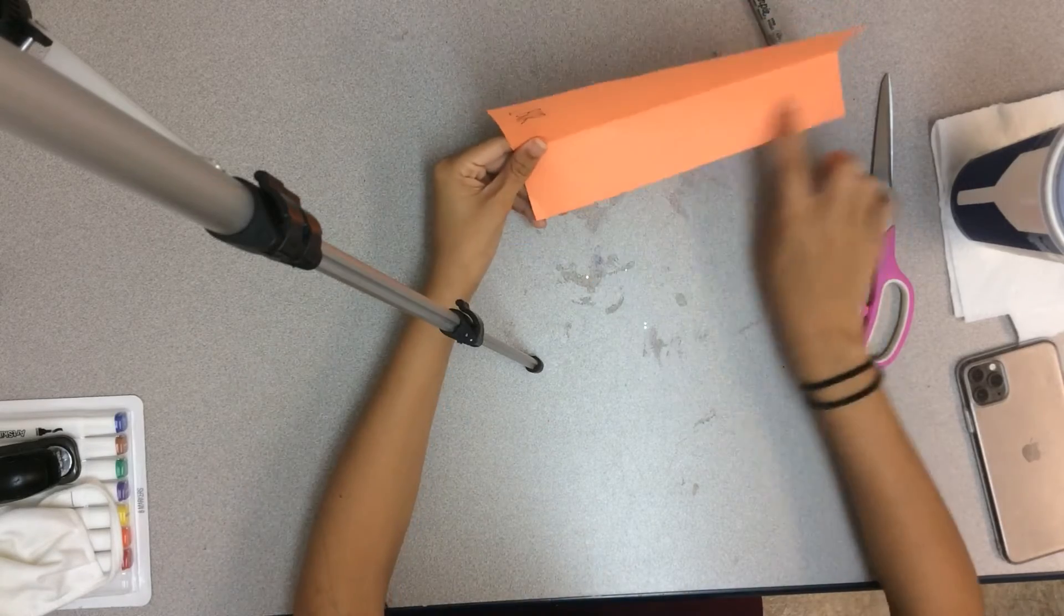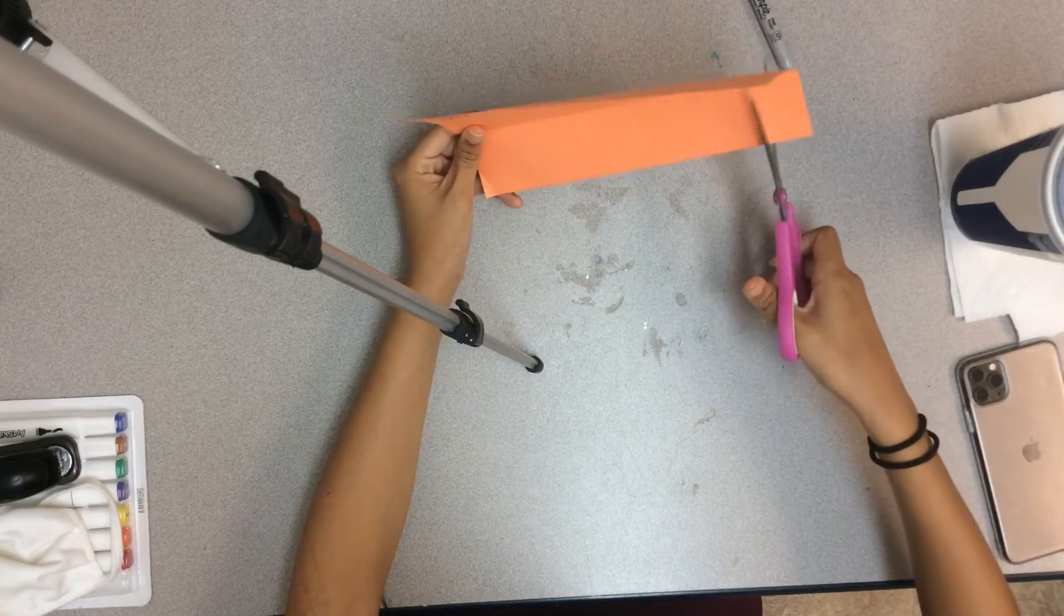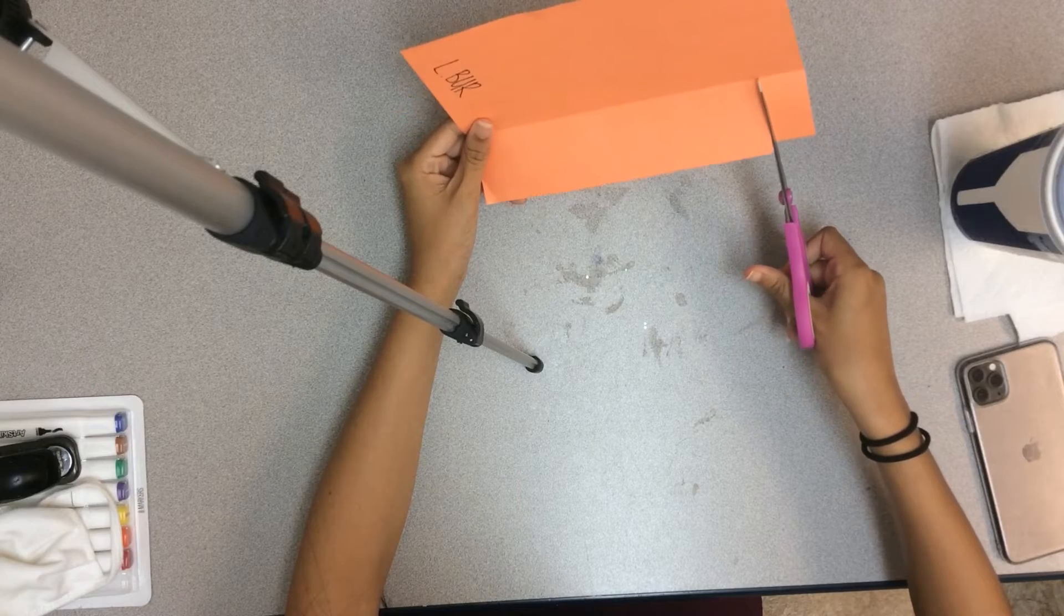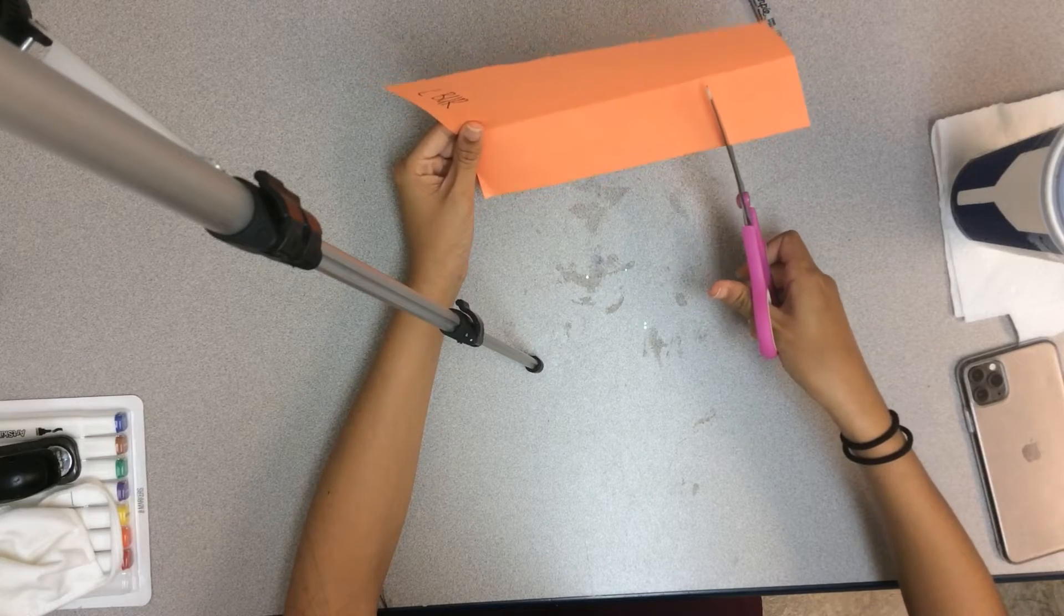Next, along the short side you folded, you're going to cut it into strips up to the fold.